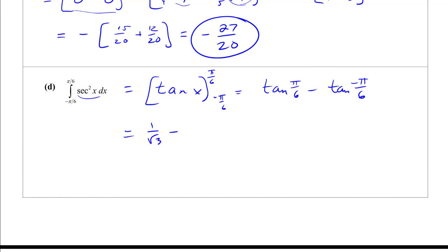tan(-π/6) is the same but with a negative sine, so negative 1 over radical 3. That gives 1/√3 plus 1/√3, or 2/√3, which can be rationalized as 2√3 over 3.